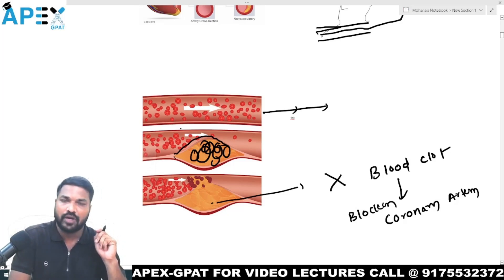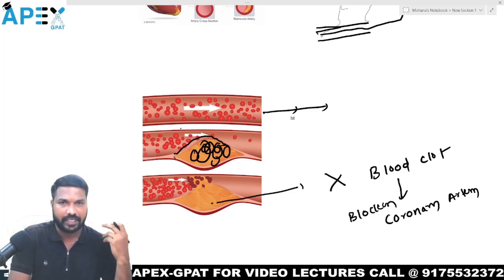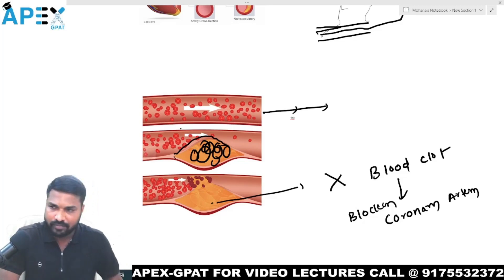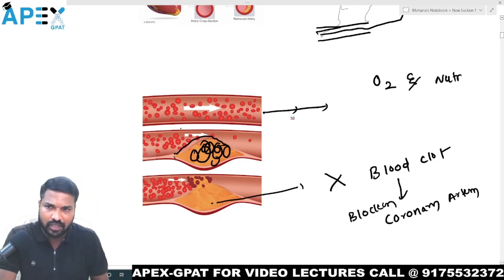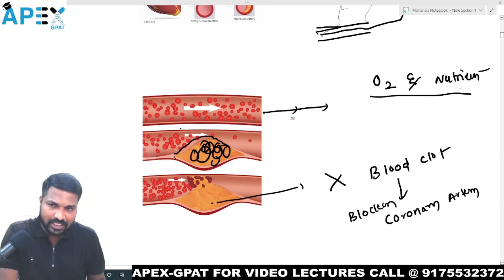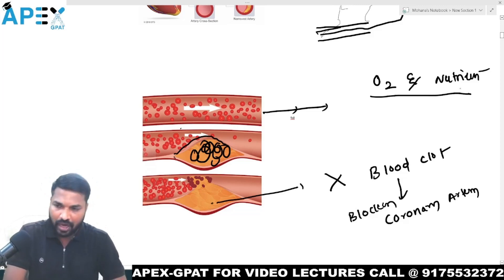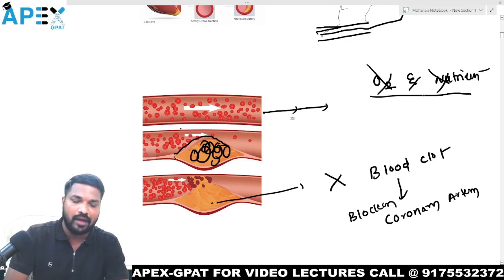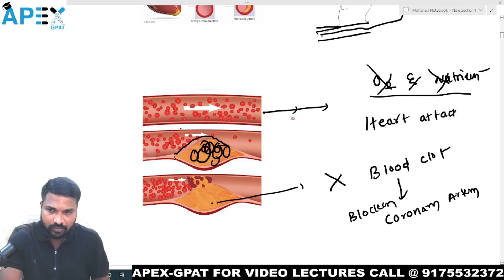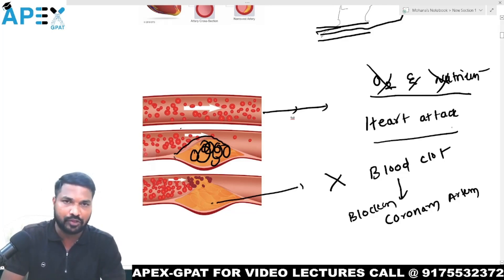When the blockage of the coronary artery occurs, the blood supply to the heart decreases. When the heart doesn't get blood, the necessary oxygen and nutrients are not supplied. When oxygen and nutrients are not supplied, the heart stops working — this is what we call a heart attack.